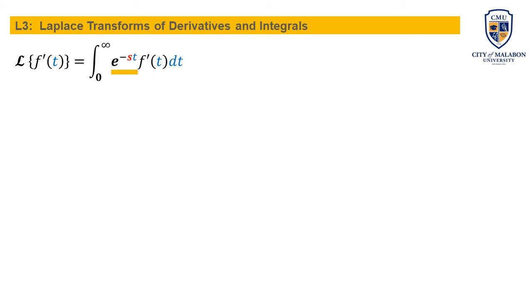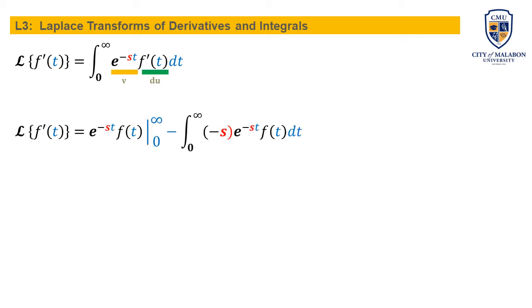We can solve this by using integration by parts, with e to the minus s t as v and the first derivative of f of t as g. Applying integration by parts, the result looks like: e to the minus s t times f of t evaluated from zero to infinity, minus the integral from zero to infinity of negative s times e to the minus s t times f of t. The first derivative has now disappeared.